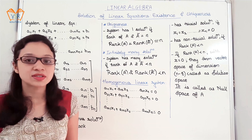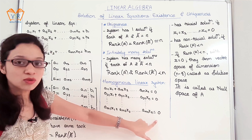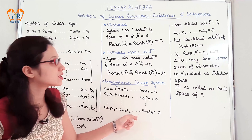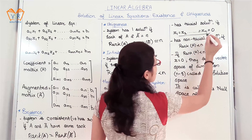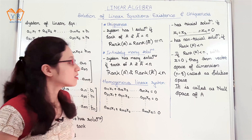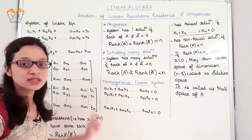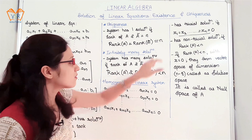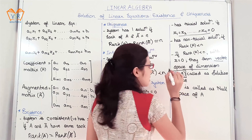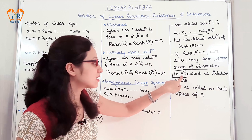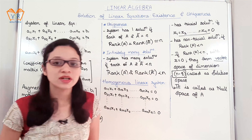Now, the next topic is homogeneous linear systems. We obtain a homogeneous linear system if all the constants are equal to 0. This homogeneous linear system has a trivial solution if all the unknowns are equal to 0, that is x1 = x2 = ... = xn = 0. The homogeneous linear system has a non-trivial solution if the rank of the coefficient matrix is less than the number of unknowns. If these conditions hold, we obtain a vector space of dimension n minus r, where n is the number of unknowns and r is the rank of the matrix — this is called the solution space, and this gives the null space of matrix A.